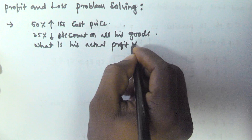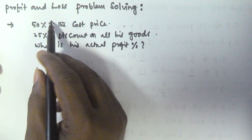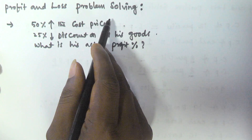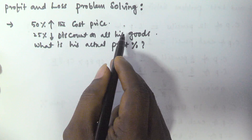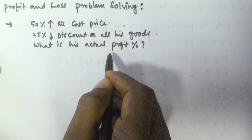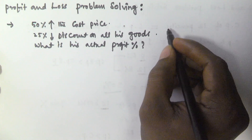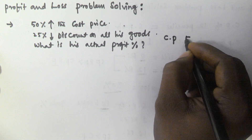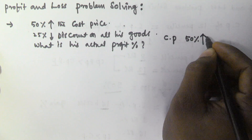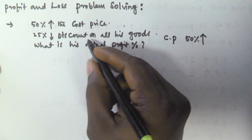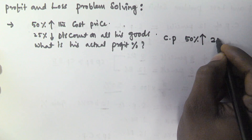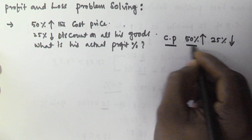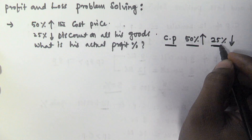So what happened: a dealer marks all his goods 50 percentage above the cost price, and then he gives 25 percentage discount on all the goods. So what is his actual profit? Initially each item would have a cost price, on that cost price he marked 50 percentage increment, and after that he is giving 25 percentage discount — that means a 25 percentage decrement.